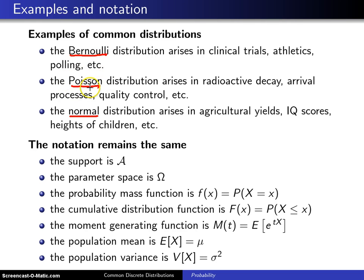For a Poisson random variable, that has applications in radioactive decay, arrival processes to a queue, and also in quality control. It has several application areas.